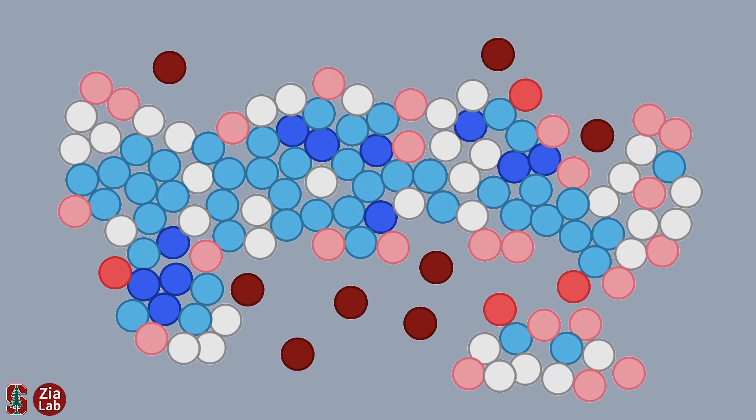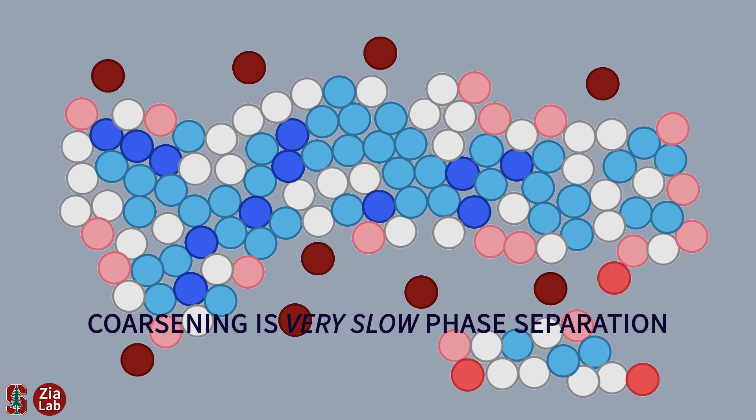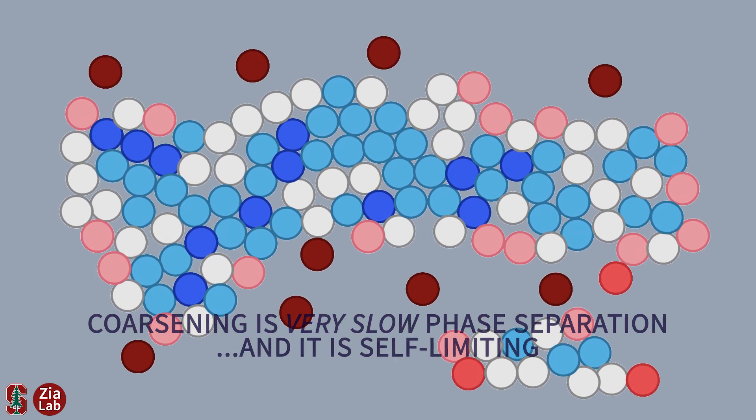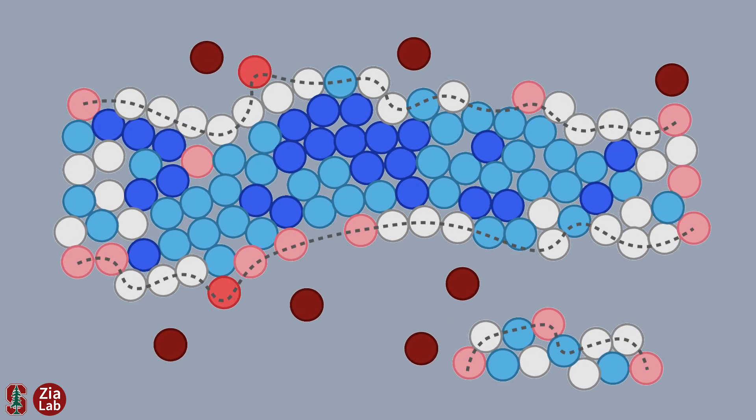Our work shows that this aging coarsening is very slow phase separation and, paradoxically, it is self-limiting. The driving force for phase separation is the curvy network that flattens out and leaves thick, ropey strands.